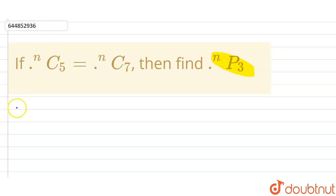Now as we know in combination that if nCr is equal to nCk, this implies n can be equal to r or n equals r plus k.